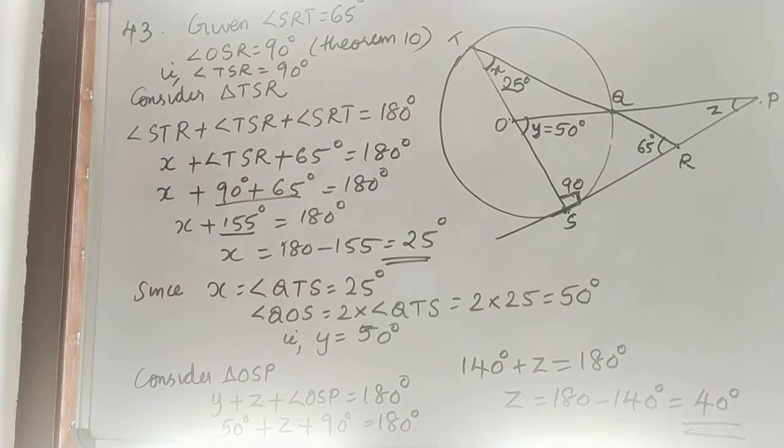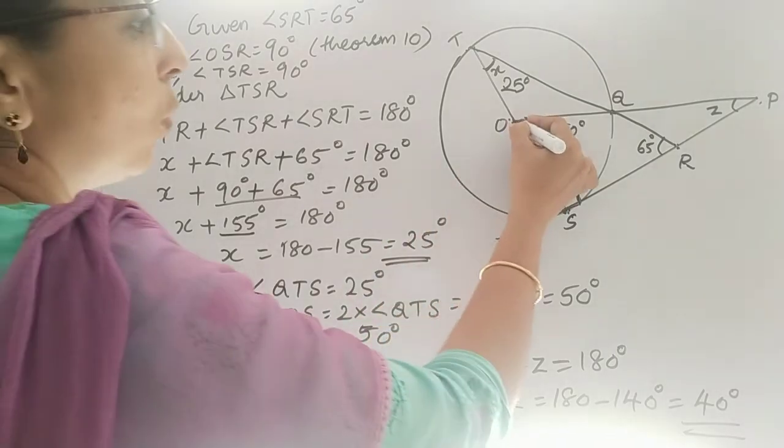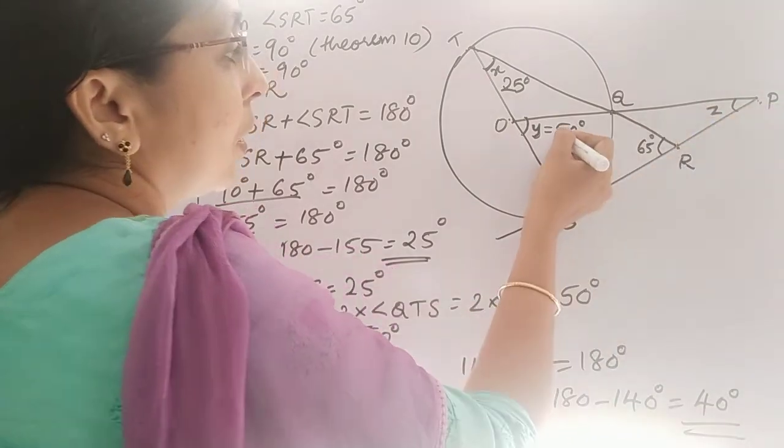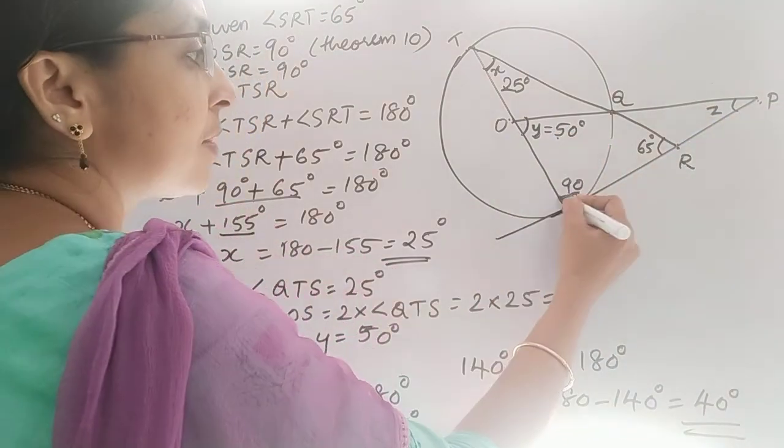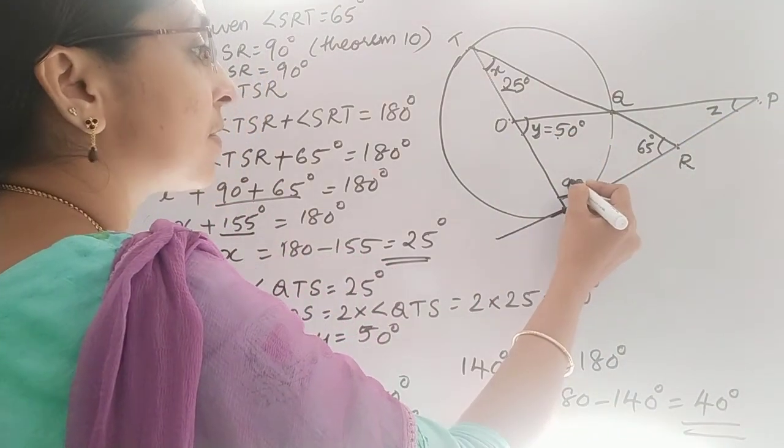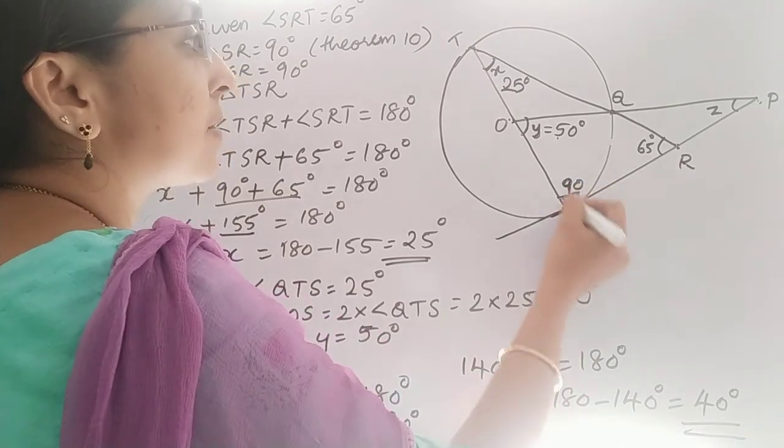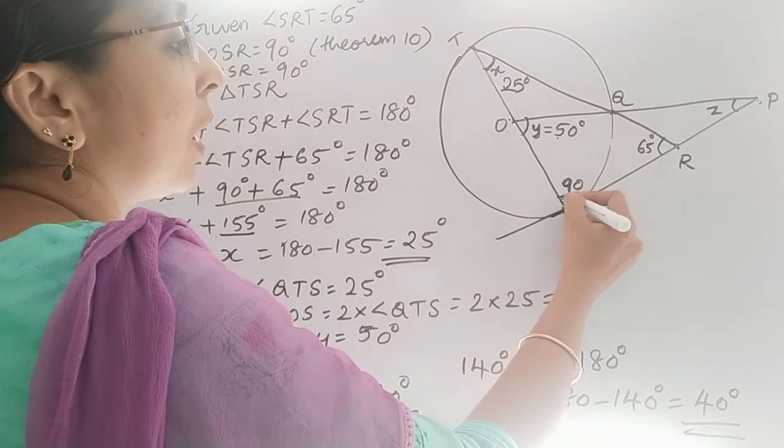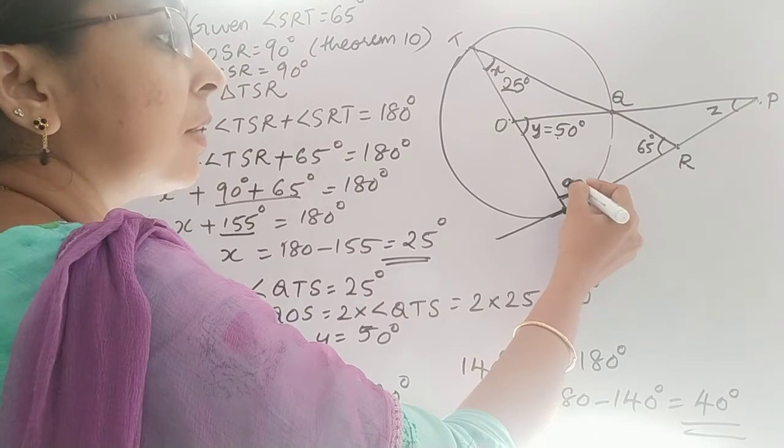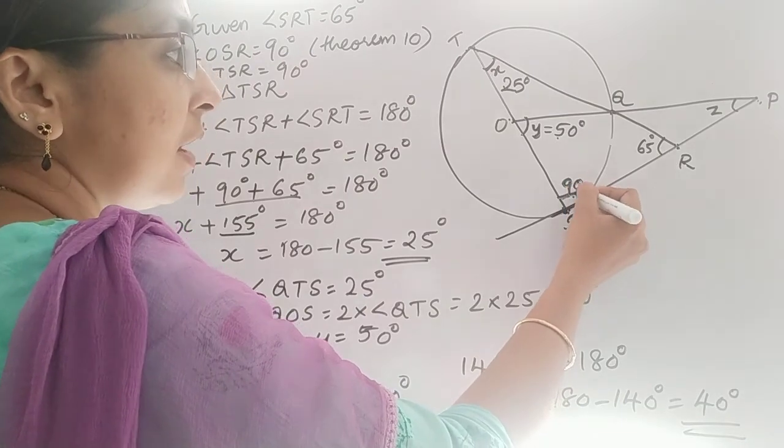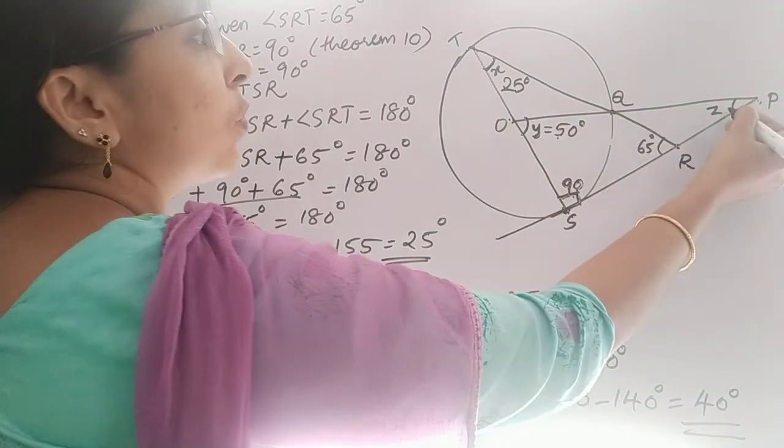So X we got as 25 degrees, Y we got as 50 degrees. Next we want to find the measure of Z. For that, consider triangle OSP. Here we got it as 50, and this is 90 degrees. Since SP is the tangent and OS is the radius, using theorem 10, we know this is 90 degrees. This is 50 degrees. So what about Z?